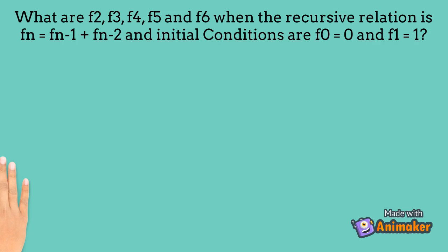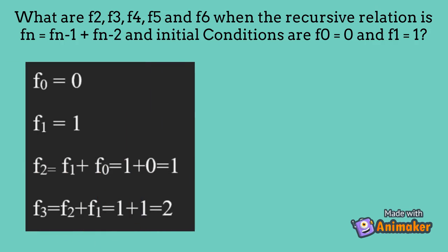Let's see an example. What are F2, F3, F4, F5, and F6 when the recurrence relation is Fn equals to Fn minus 1 plus Fn minus 2, and the initial conditions are F0 equals to 0 and F1 equals to 1? From the question, we know that F0 equals to 0 and F1 equals to 1. From the recurrence relation, F2 equals to F1 plus F0, which is 1 plus 0, and the answer is 1.